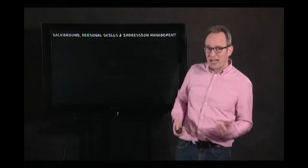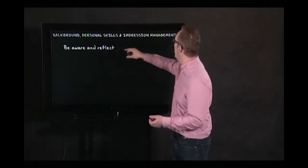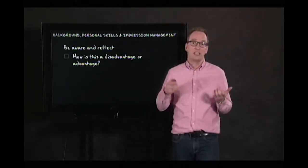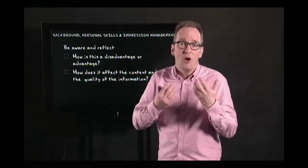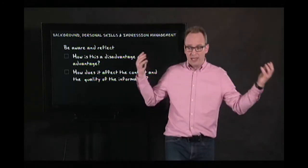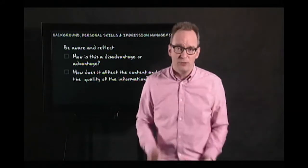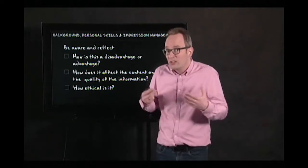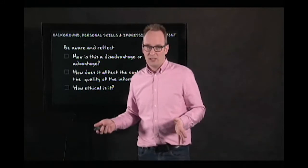So we've talked about background, personal skills, and impression management — you have to be aware of these, reflect on your skills or lack of skills, and think about whether they are an advantage or disadvantage, how they affect the quality of your material and your relations with people, and the depth or contextuality of the information. And never forget: how ethical is it? How many impression management choices are okay? All these things you have to reflect on to do good participant observation.